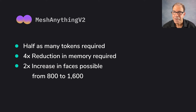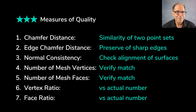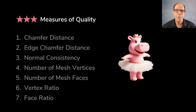So, how good are the objects it makes? There are seven different measures of quality that are used to answer that question, which you can see listed here. But let's apply the Pink Hippopotamus Ballerina test and see how that turns out.